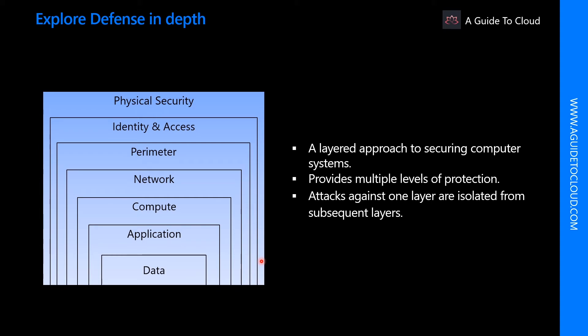Physical security is the first line of defense to protect computing hardware in the data center. Identity and access controls govern access to infrastructure and change control. The perimeter layer uses DDoS protection to filter large-scale attacks before they can cause any denial of service for end users.